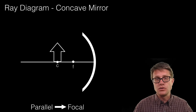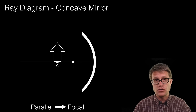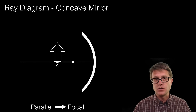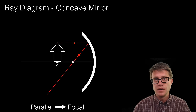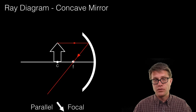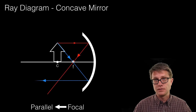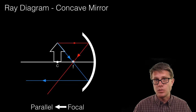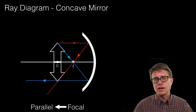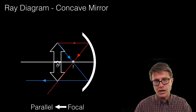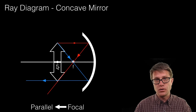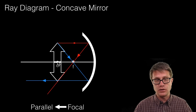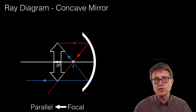Now the object is moved up to the center of curvature. Pause and try to draw this one out. Start at the top: draw a parallel line, then through the focal point. Then start at the top again, go through the focal, and it comes back parallel. The image is going to be upside down. If you apply the same rules to the bottom — parallel back through focal, and through focal back to parallel — the bottom ends up right where the top of that image was. So the image is the same size and inverted.